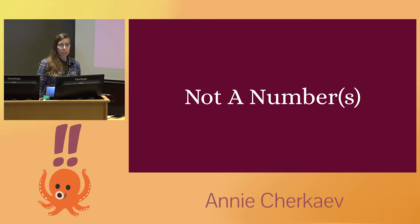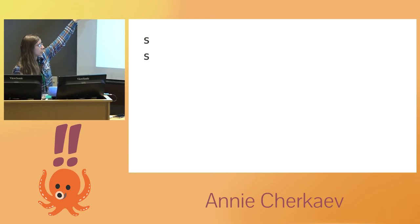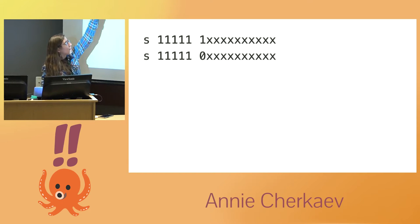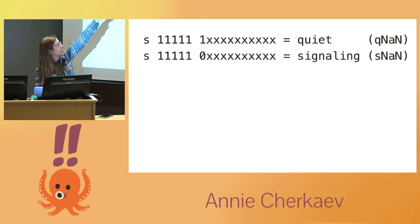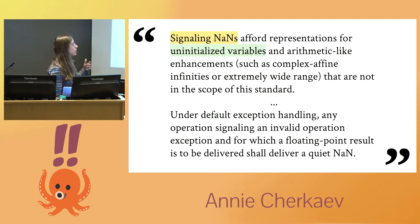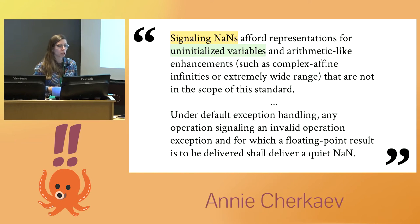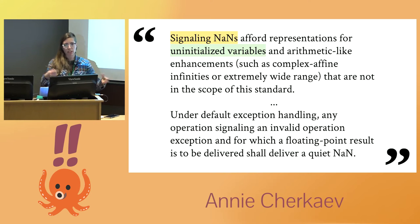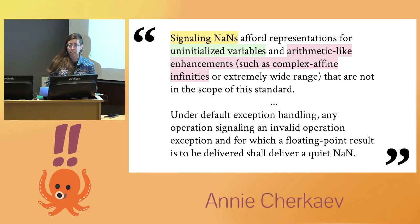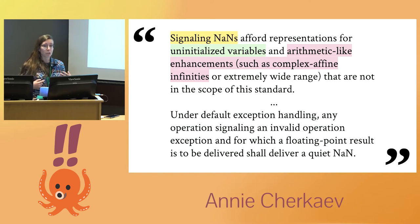And actually, weirdly, there are two of them. To specify not a number: we have some sign bit we don't really care about, we set all of our exponent bits to one, and then we have one bit in the mantissa that's also set to one. If it's the top one, it's a quiet NaN. If it's some other one, it's a signaling NaN. Signaling NANs are recommended to represent uninitialized variables because they raise an exception when you touch them. The standard also recommends them for arithmetic-like enhancements such as complex affine infinities — and I spent time googling that and have no idea what it means, so if anybody knows, please come talk to me.